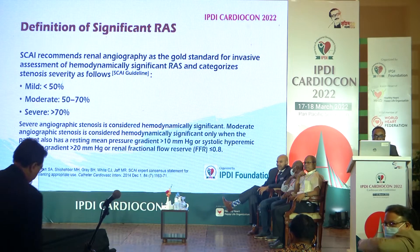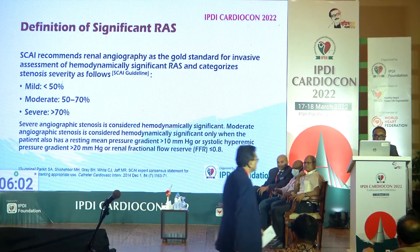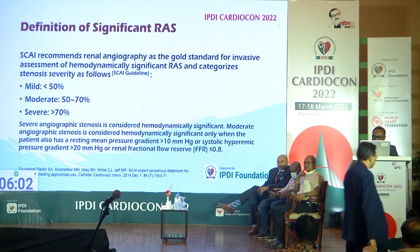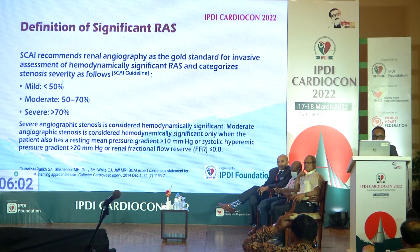So what is renal artery stenosis? It is classified as mild when less than 50%, moderate when 50 to 70%, and severe when more than 70%. It can be stratified by hemodynamic importance by FFR, and also by direct pressure gradient.